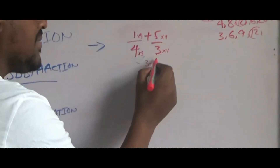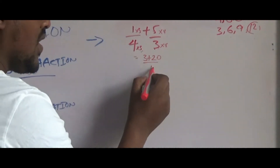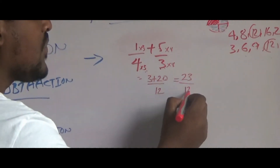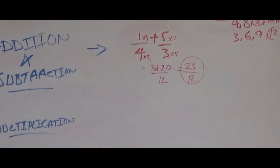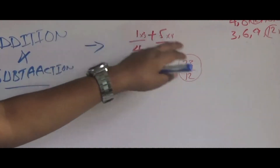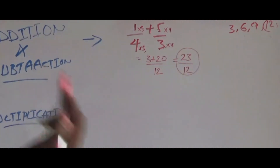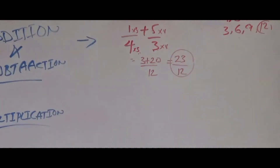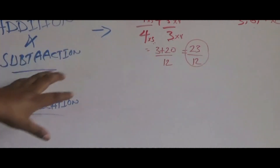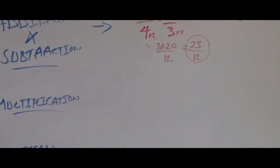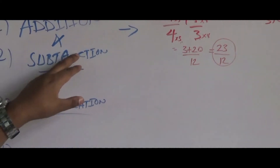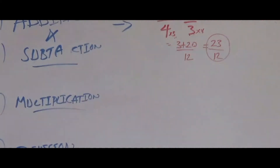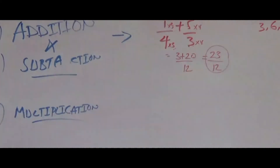23 over 12 is equal to 1 over 4 plus 5 over 3. Minus 1 is equal to 3 minus 20. Negative 17 over 12. So if you have a fraction added to a fraction, the result of the fraction operation equals that value.